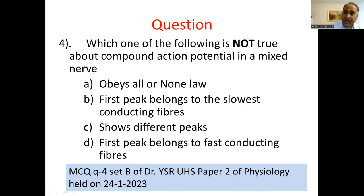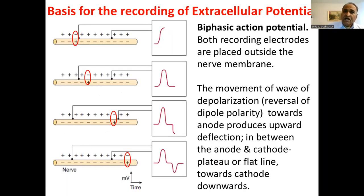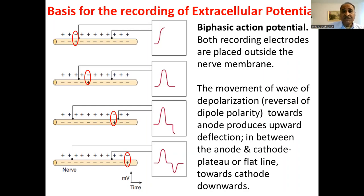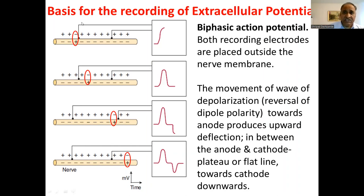Let us understand the basics of compound action potential. This is the basis for recording extracellular potentials. We have a number of extracellular potentials recorded — especially the EEG, ECG, EMG. These extracellular potentials are recordings made by placing electrodes on the surface of the excitable membrane, as in case of EEG on the scalp, or heart leads, or EMG on the motor unit points.